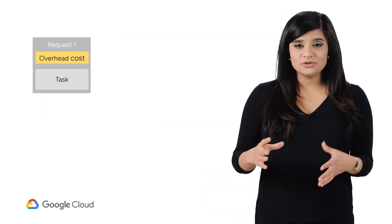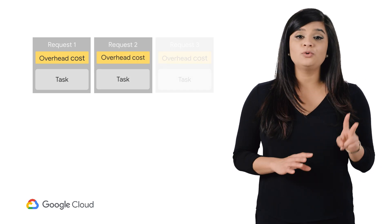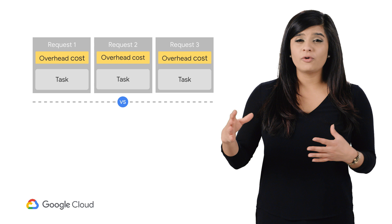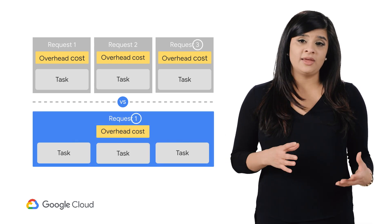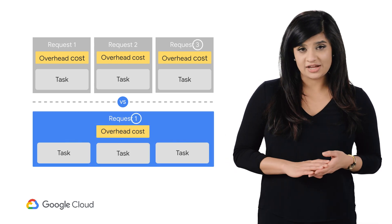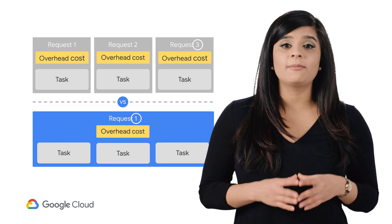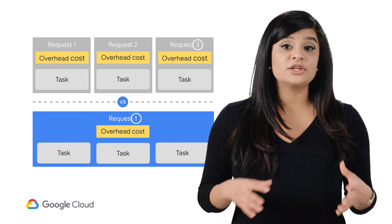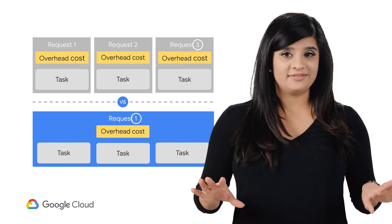When you use the Docs API, you're going to want to batch your requests for two main reasons. First, going back and forth with the Google servers to execute updates to your document will actually slow your application down. Second, Google APIs are bound by quota restrictions, so batching requests means that you're going to use less quota. This is definitely a win-win.